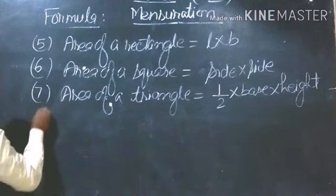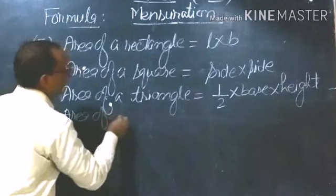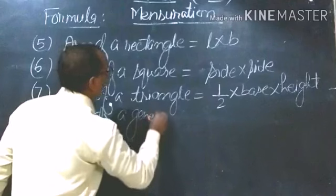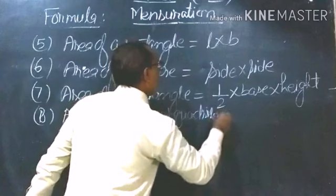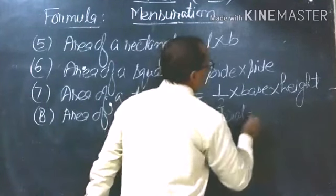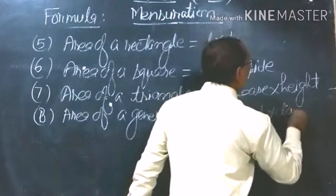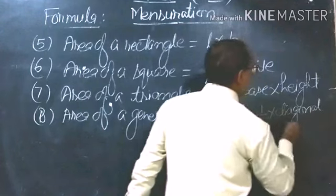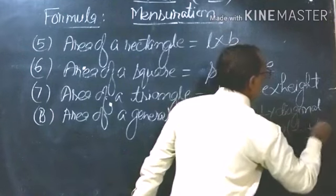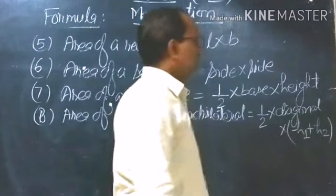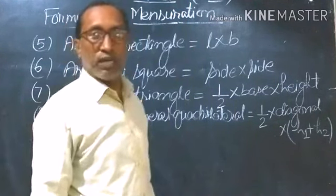Area of a general quadrilateral is equal to ½ × diagonal × (h1 + h2), where h1 and h2 are the perpendiculars from the vertices to the diagonal.